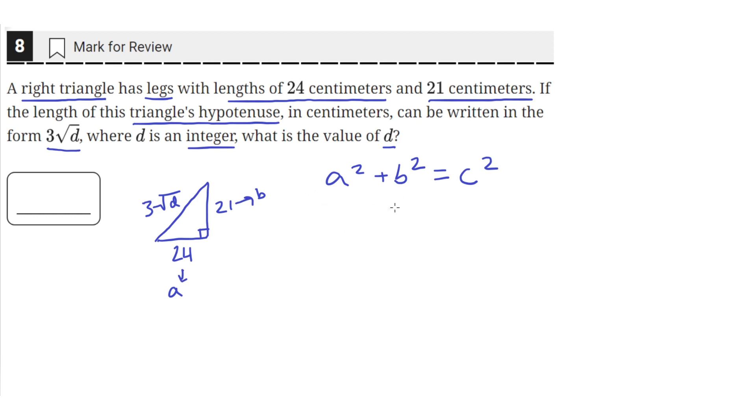So we'll just solve for the value of c. So a is 24 squared plus b, which is 21 squared, and then this will equal c squared.